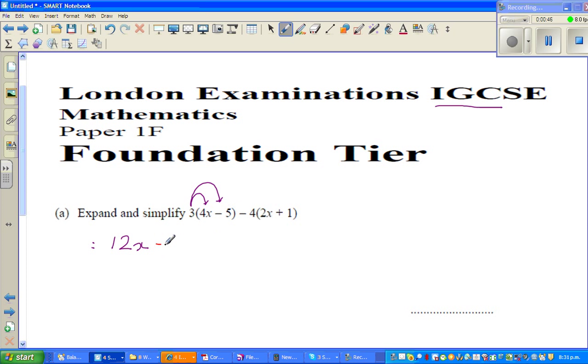You're multiplying each term inside the bracket by negative 4. Whenever you have a minus, be very careful. Negative 4 times 2x is negative 8x, so I'll write minus 8x here.